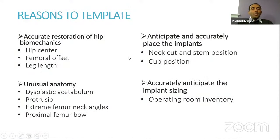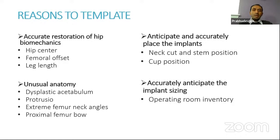Why do we template and what are the reasons we do templating in total hip arthroplasty? Preoperative templating helps us in accurate restoration of hip biomechanics because we can plan the hip center, know the femoral offset, and plan for leg lengths appropriately. There could be unusual anatomies like dysplastic acetabulum, protrusio, extreme femur neck angles, and significant deformities in the proximal femur, so preoperative templating helps us evaluate and plan accordingly. We can anticipate and accurately place implants by planning our neck cut and stem position, and plan our cup position exactly.